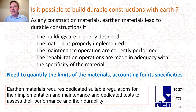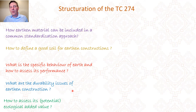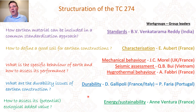The main question we want to answer in the TC is how earth materials can be included in a common standardization approach. To answer this, we need to address sub-questions: how to define a good soil for construction, what are the specific behaviours of earth materials and how to assess performance, how to assess the durability of earth materials, and how to define the ecological added value of earth construction, which is important for the promotion of this material. Eight working groups have been created within the TC to address these questions.